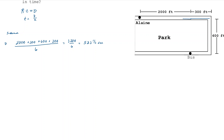We want that in minutes since she has 7 minutes to catch her bus. 533⅓ seconds times (1 minute / 60 seconds) gives us 8.89 minutes. So if she just stays on the sidewalk, she'll need almost 9 minutes — she misses the bus.